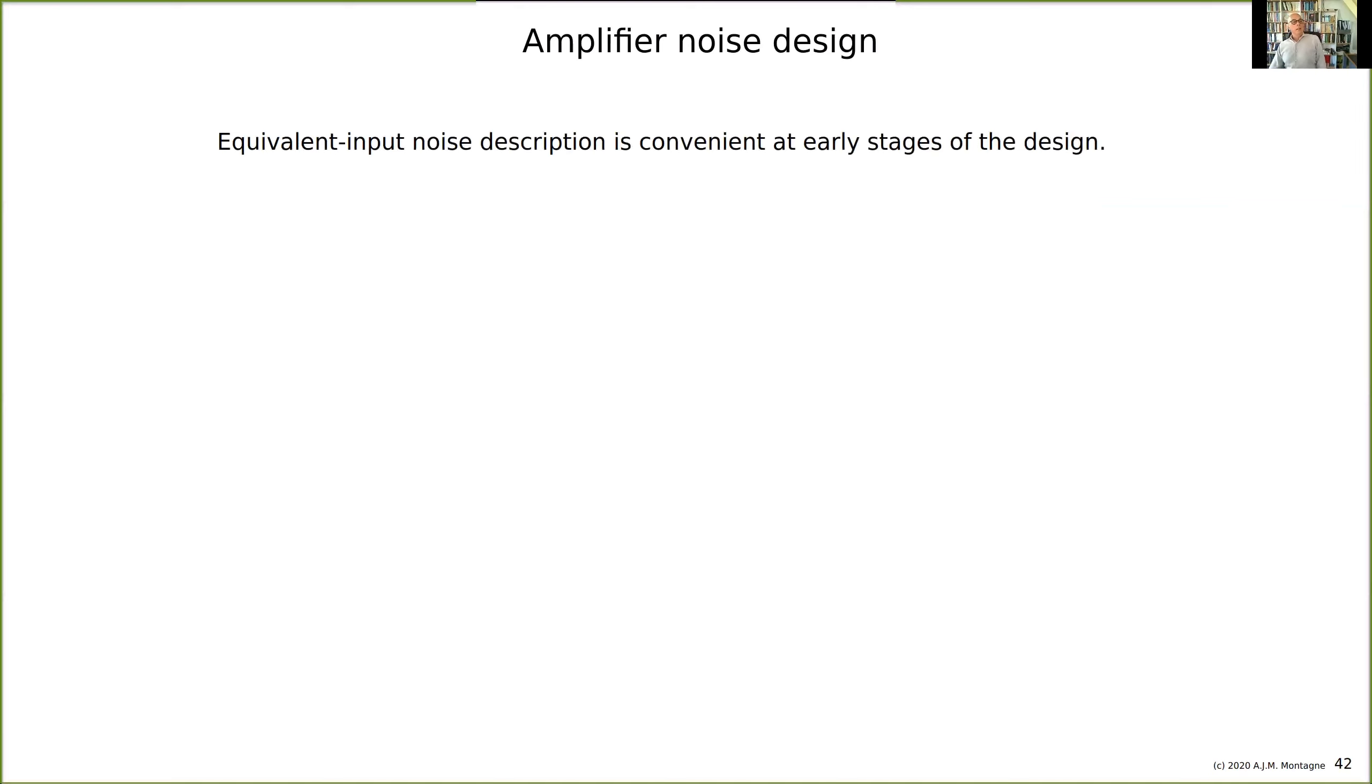For example, if VN is more than a certain value, then the amplifier is not good enough. Or if IN is too high, then the amplifier is not good enough—it should be less than this.